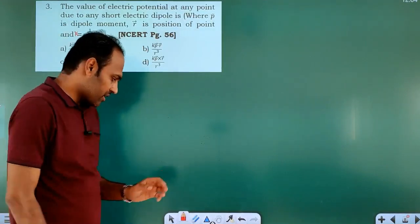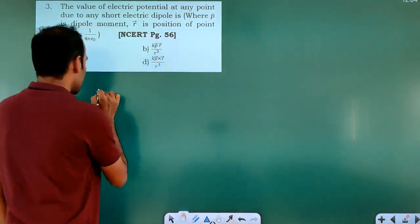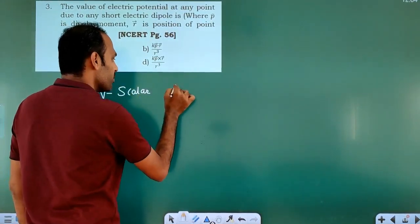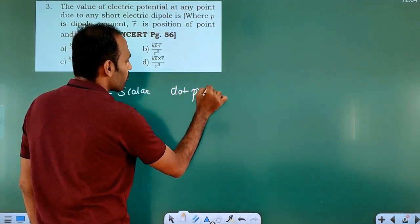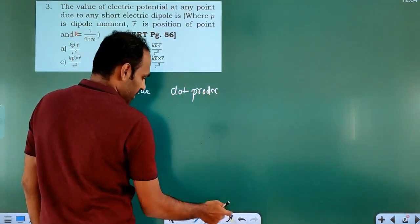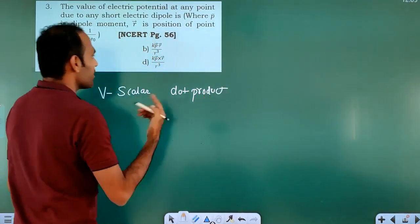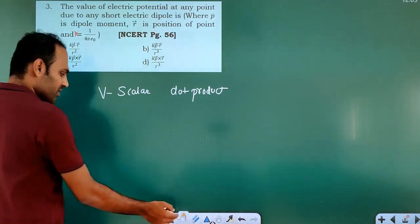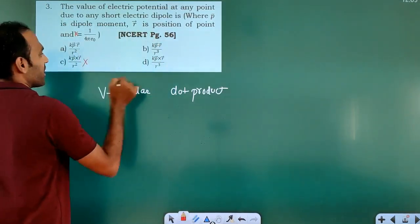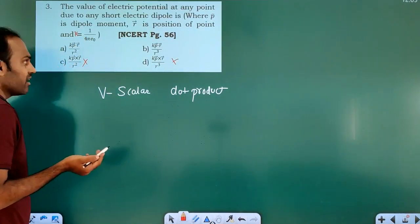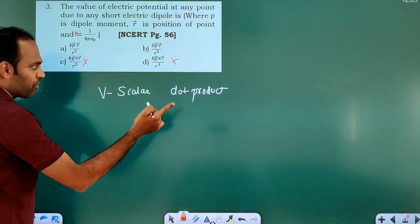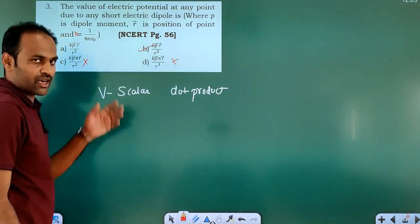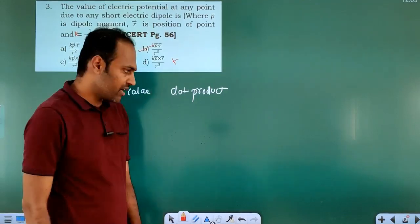Clearly, electric potential is a scalar quantity, so it has to be expressed as a dot product only — not a cross product and not a vector quantity. The formula is divided by r cubed, so option B with the dot product expression is correct.